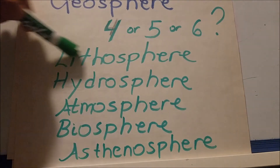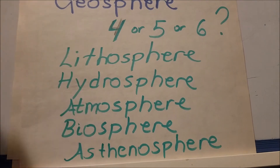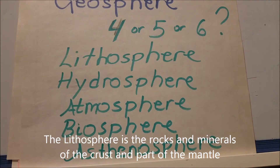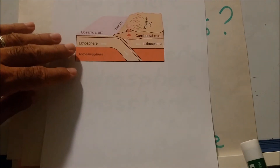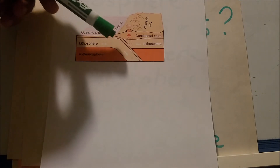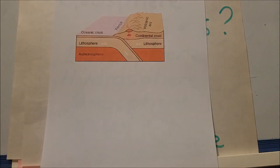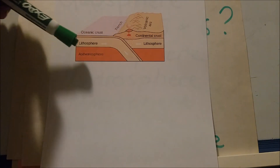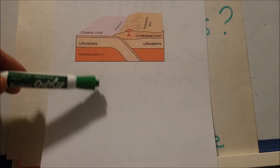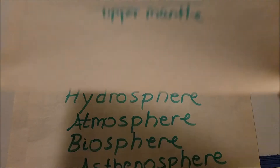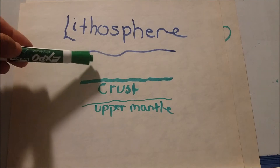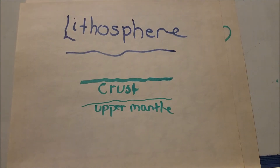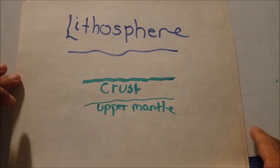The first one we'll talk about is the lithosphere. That is the land area — the land part of the earth. It includes the continental crust and also a little bit of the upper mantle. The land part — rocks and minerals — is the lithosphere. The solid part of the earth, the minerals and rocks that make up the earth.